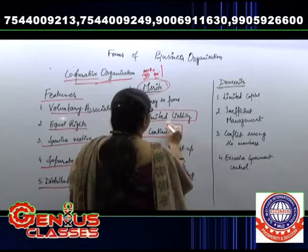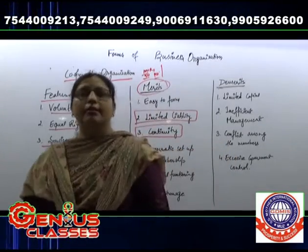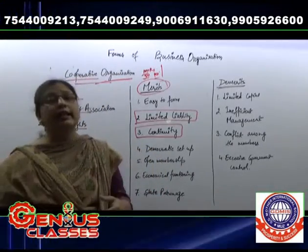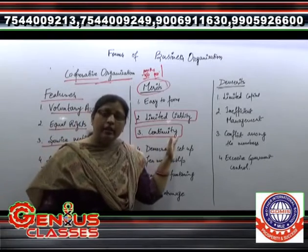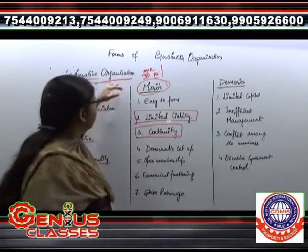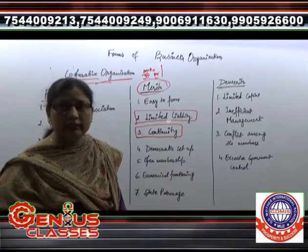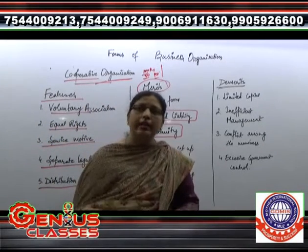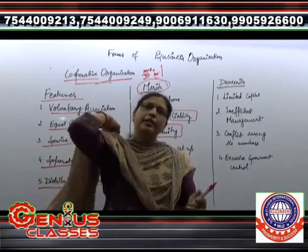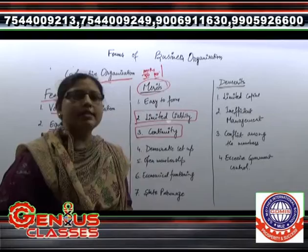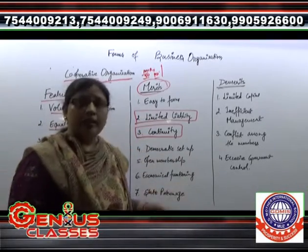Next come to continuity. Continuity ki jab hum baat karte hain, to business ki continuity hamesha bani rahegi — yahan pe koi pattern nahi rakhta ki kisi member ki death hoti hai ya insolvency hota hai, kyunki baaki members to carry on karte rahte hain. Business ki na — ek single member ke jaane ya kuch happening ho jaane ke karan is business pe koi asar nahi hoga, to continuity possible hai is business ki.